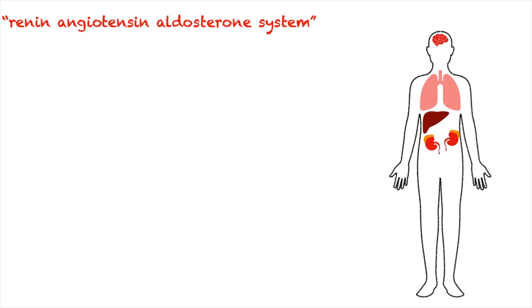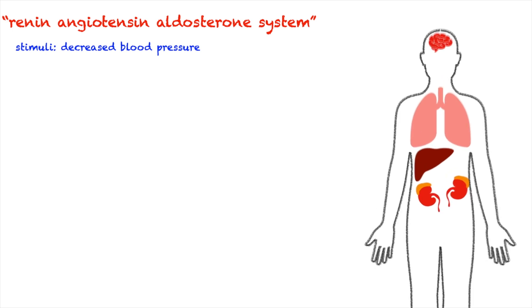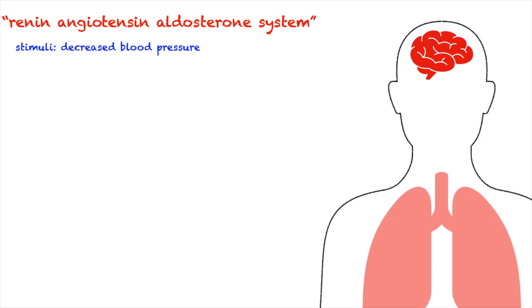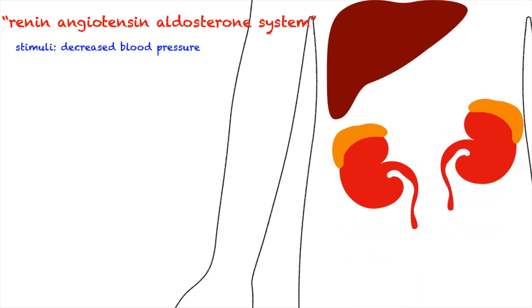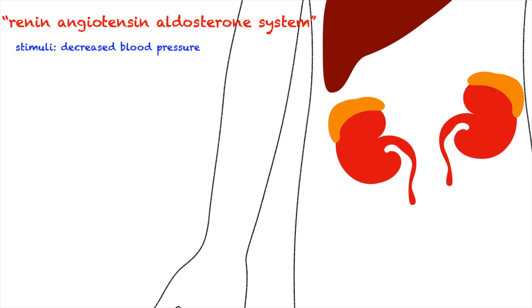The system starts with a stimulus, which is the decrease in blood pressure. The decrease in blood pressure will be sensed by the sympathetic nervous system and the kidneys. When this happens, the kidneys secrete an enzyme called renin.